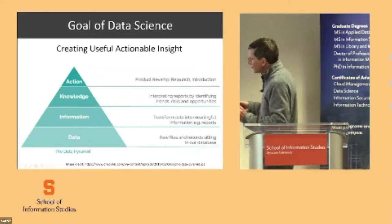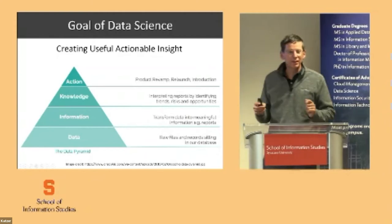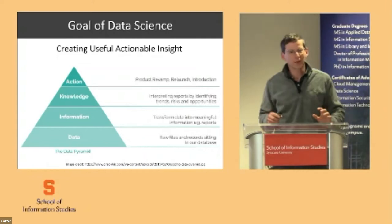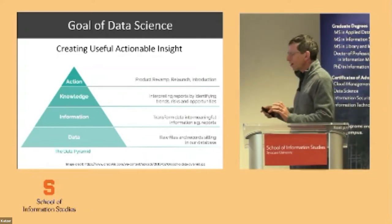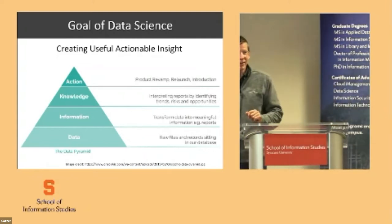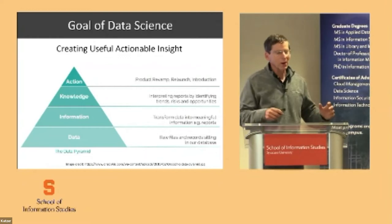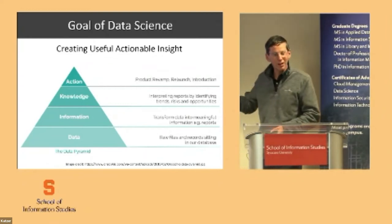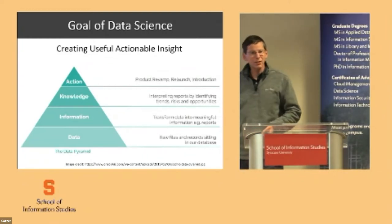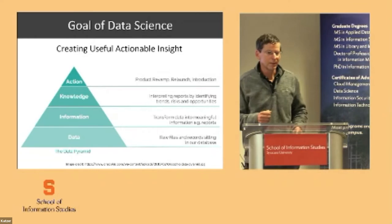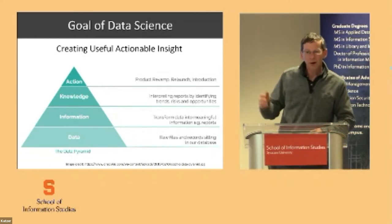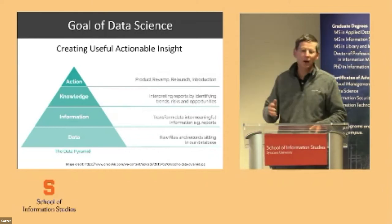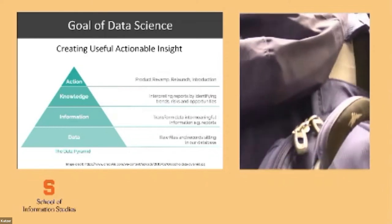If we think about data — Raj talked about a lot of different types of data — I'm going to start with a very simple example: a chocolate bar. If we sell chocolate bars, data, which Raj mentioned probably at least 15 times, raw data is just the sale of a chocolate bar. I work in a store and I sold a chocolate bar at four o'clock this afternoon, and I also sold a chocolate bar at 10 o'clock this morning. That's data.